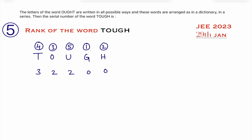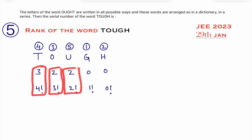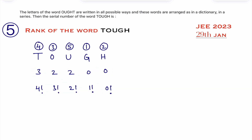After writing the counts, write the factorials in this order: 0!, 1!, 2!, 3!, 4! — observe the order carefully. Now multiply each count by the corresponding factorial: 3 × 4! + 2 × 3! + 2 × 2! + 0 × 1! + 0 × 0!.